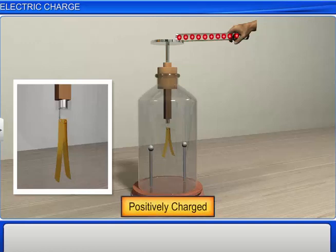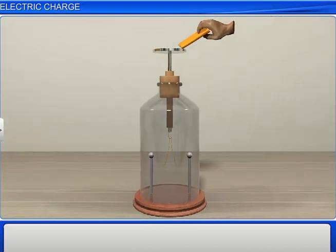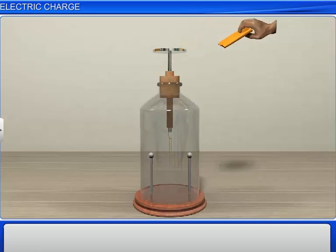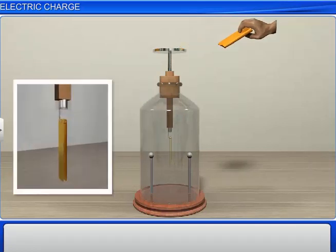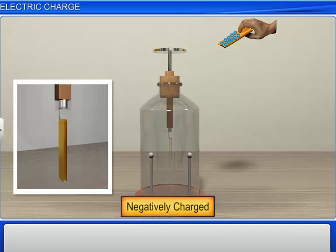Now, if we touch the metal disc with the silk cloth used to rub the glass rod and take it away, we observe that the gold leaves fall back to their original position. Thus, we can say the silk cloth was negatively charged. On contact, the opposite charges on the gold leaves and the silk cloth nullified each other.